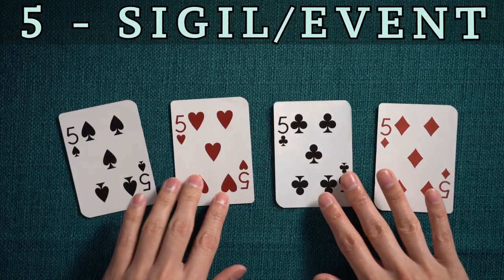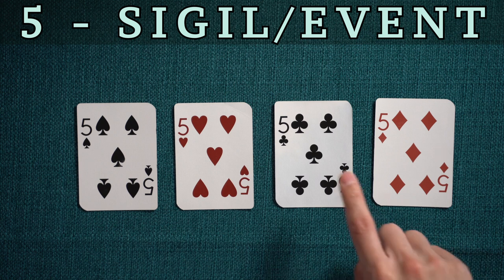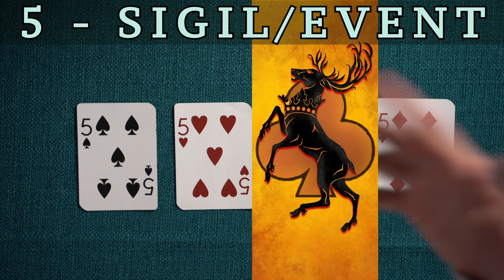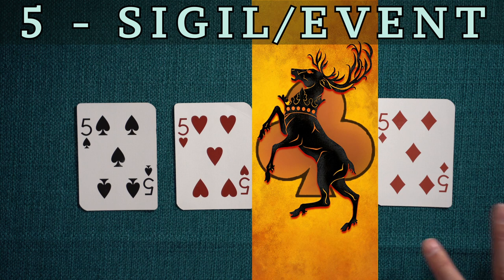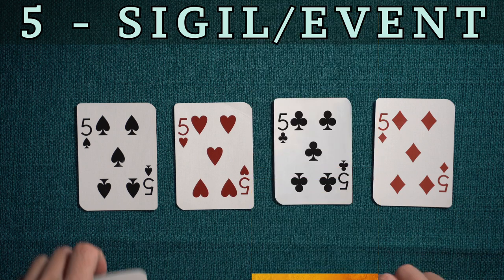Number five is easy — I went with the sigils of each house, since five looks like an S. The least memorable sigil to me is the Baratheon one, so I'm adding a storm in the mind movie whenever that card comes up.